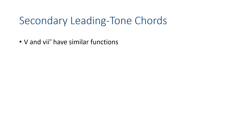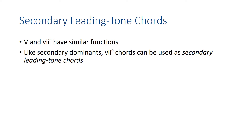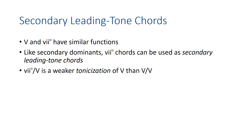We also know that a seven diminished has a similar function to a five — they're both dominant functions. So, like a secondary dominant, you can use a secondary leading tone chord. You can have a seven in some other key, and it would have a similar function of tonicizing something in a secondary key. But seven diminished of five would be a weaker tonicization of five than five of five would be. Essentially, they do a similar thing.